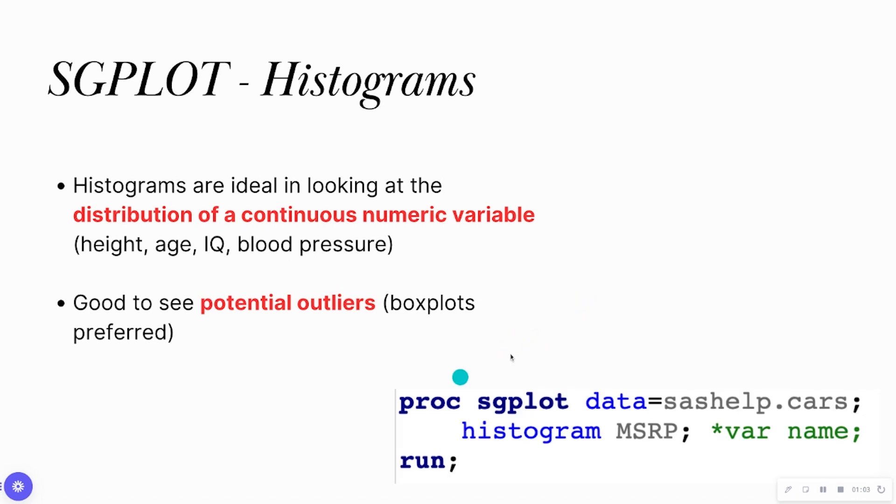So the basic syntax of PROC SGPLOT when we're trying to do a histogram: we're going to do PROC SGPLOT, we're going to have the data equal to the data set, and then we're going to have the key statement histogram, and then we're going to have the variable name of what we want to create a histogram for.